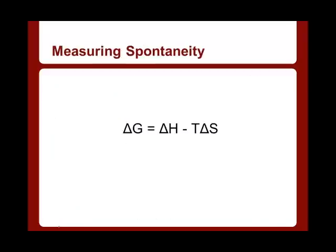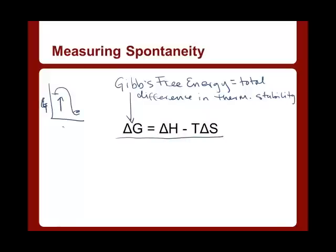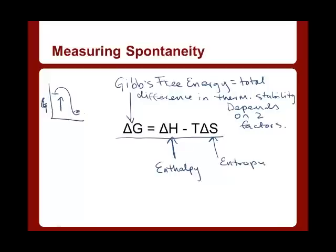To measure spontaneity, we use this equation, and it involves a few different terms. The first term is G — Gibbs free energy. The change in Gibbs free energy is the total difference in thermodynamic stability. On our graph, we're saying how big this change was. Gibbs free energy depends on two factors included in this equation: enthalpy, which is ΔH, and entropy, which is ΔS. These two factors — enthalpy and entropy — contribute to the total overall difference in thermodynamic stability.